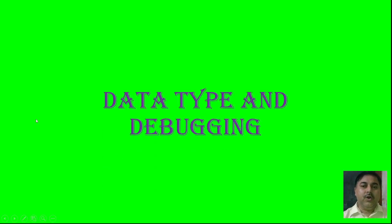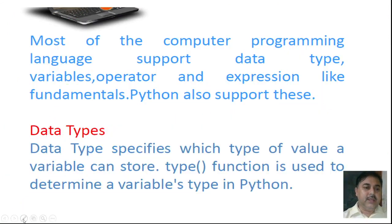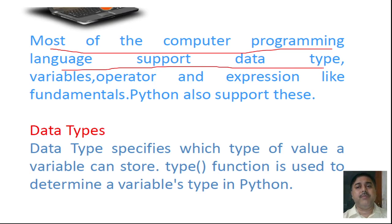Good afternoon, good morning, dear students. Today we will discuss the different parts of data types and debugging — how to do data type and debugging. There are different types of computer programming languages, and those languages support various patterns of data. Various patterns of data are there, and they operate in different ways.